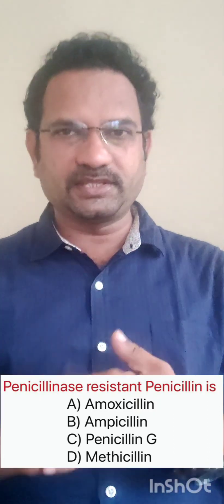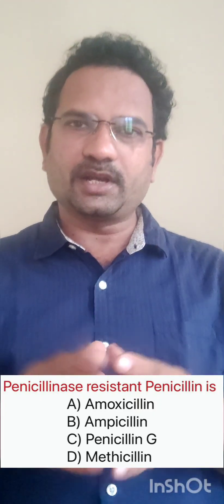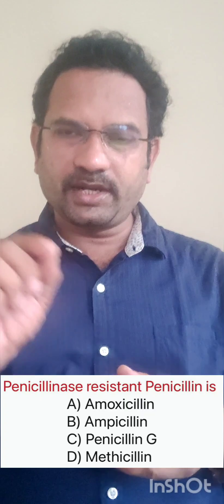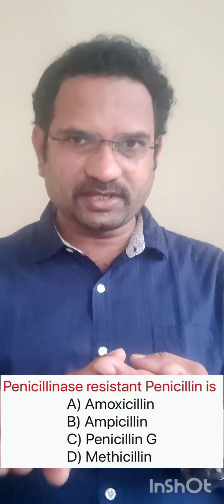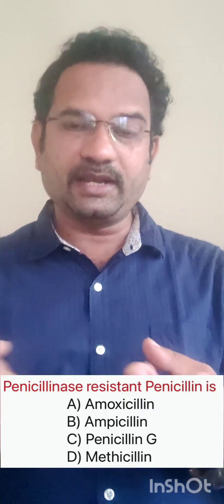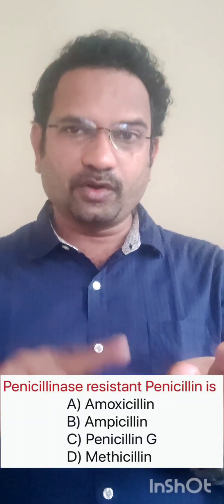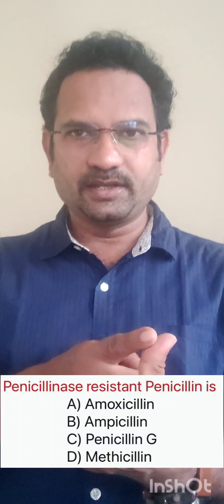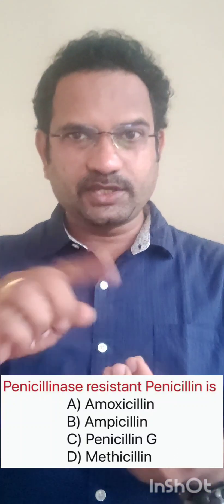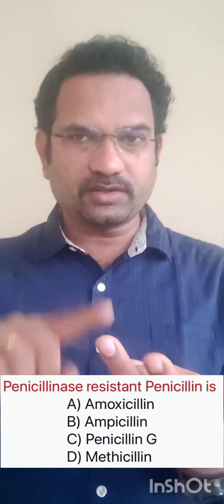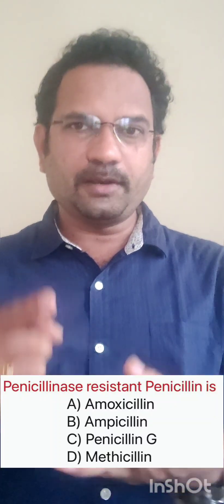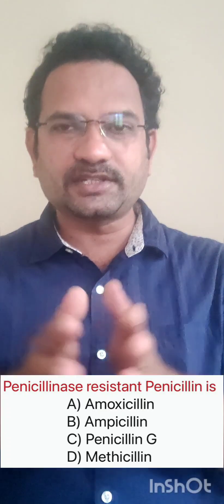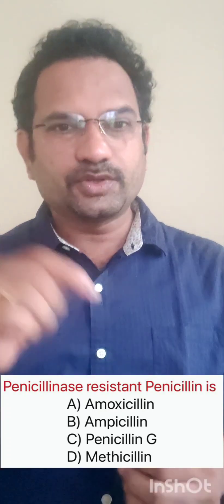What is resistant? Methicillin. There is a mnemonic: CONDM. C — Cloxacillin. O — Oxacillin. N — Nafcillin. D — Dicloxacillin. M — Methicillin. All these CONDM drugs — Cloxacillin, Oxacillin, Nafcillin, Dicloxacillin, Methicillin — are penicillinase-resistant penicillins. So the answer is option D, Methicillin.